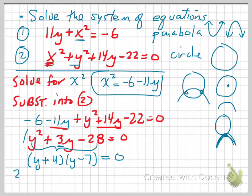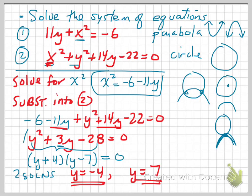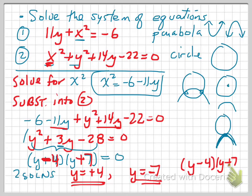So there are two solutions for y. Wait — I goofed here. It should not be plus 4 and minus 7; it should be y minus 4 and y plus 7. So the two solutions are y is equal to positive 4 and y is equal to negative 7. We've got two roots — positive 4 and negative 7 — because the factors are y minus 4 and y plus 7 equal to zero.